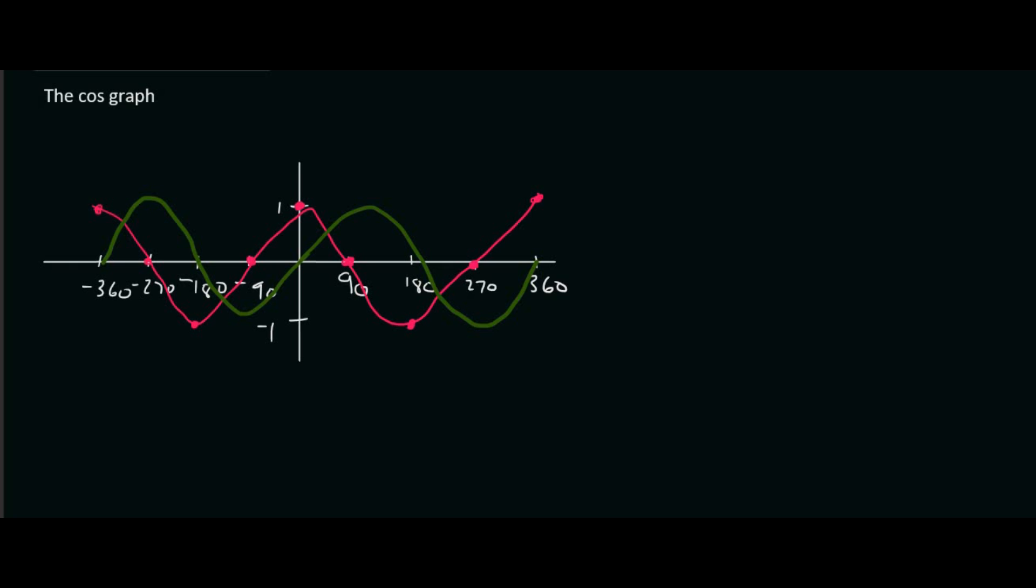I mean imagine we took the green sin graph and we just dragged it backwards a little bit. So if we dragged it in that direction, well guess what? It would be exactly on top of the cos graph. So they are the same kind of graph. They just start at a different place.